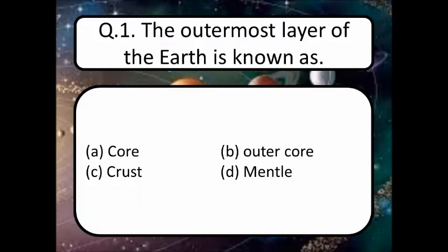The first question: the outermost layer of the Earth is known as — read your options and tell me the correct answer. You can pause the video to think about the answer. The correct answer is option C: Crust.